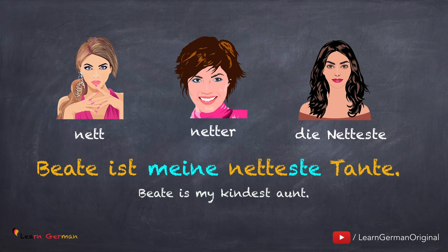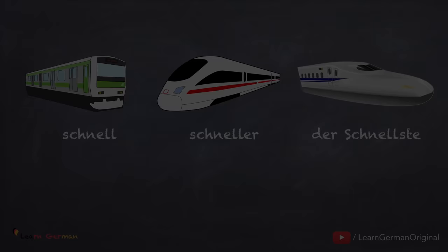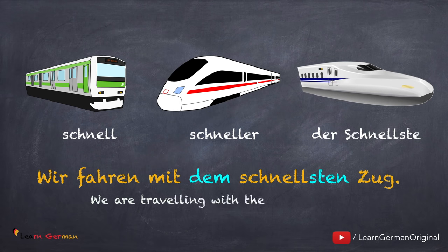Und hier ist das erste Beispiel: Beate ist meine netteste Tante. Wir fahren mit dem schnellsten Zug. Mit is a dative preposition, hence we use dem. And accordingly the Adjektivendung. Therefore: mit dem schnellsten Zug.